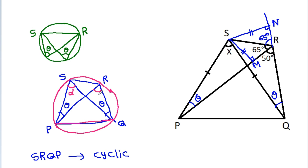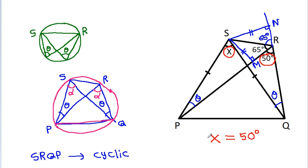Now from chord PQ, this angle is 50 degrees and this angle is x. Since SRQP is cyclic, x will be equal to 50 degrees.